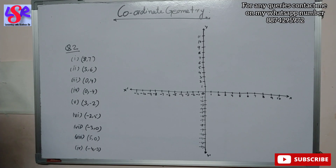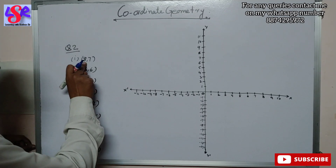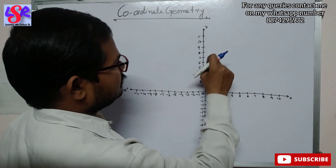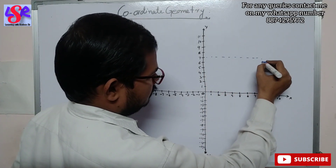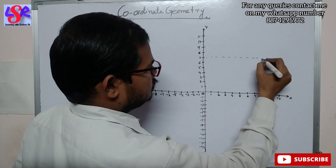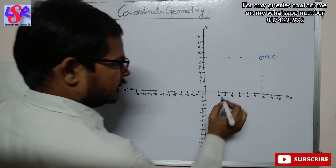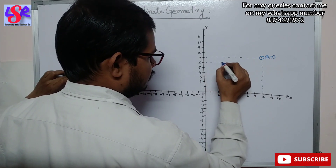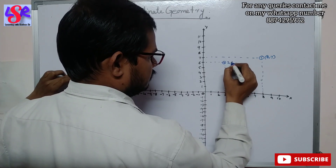Now I will be doing question number 2. Here we are having these coordinates and we have to plot them on the graph. The very first one is 8 comma 7, meaning x is 8 and y is 7. We mark 8 on the x axis and 7 on the y axis, and this point is plotted accordingly. Then the next one is 3 comma 6 — we take 3 from x and 6 from y — and here we get the point 3 comma 6.